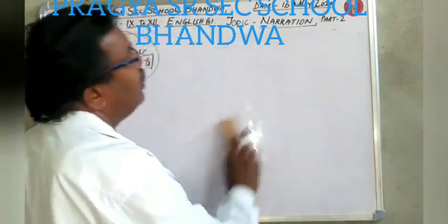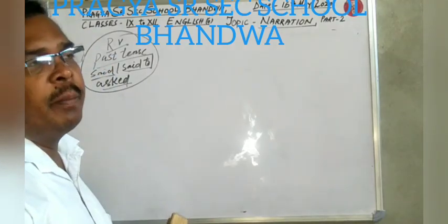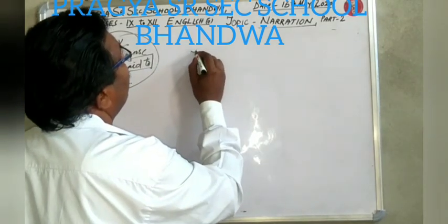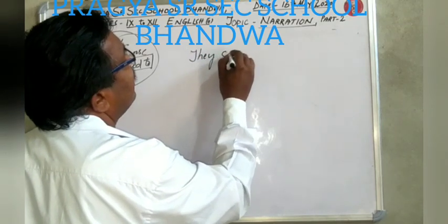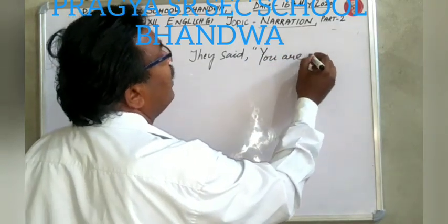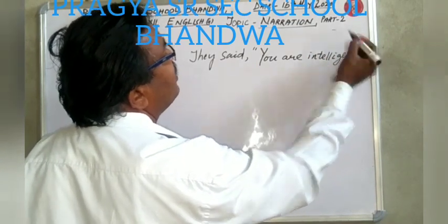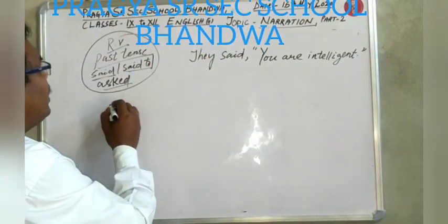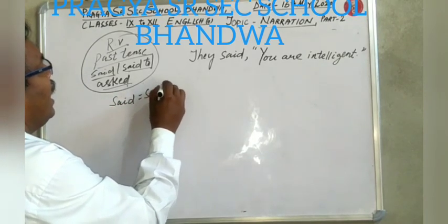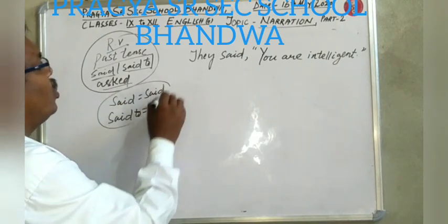I have already told you that in person change throughout the narration we will follow the SOR rule. Let's give one example: 'They said, you are intelligent.' I want to tell one thing more — that 'said' will remain 'said', and 'said to' will be changed to 'told'.